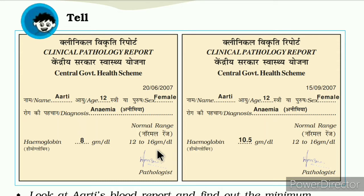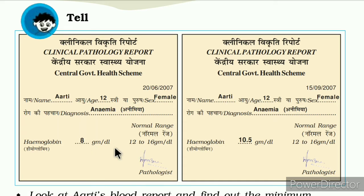So 8 gm/dL is very low compared to the normal of 12 gm/dL. The first test report is from 2006–2007, where hemoglobin was 8 gm/dL. The next test report dated 15-09-2007 shows hemoglobin has increased to 10.5 gm/dL. You can see the blood report, and the report indicates anemia.